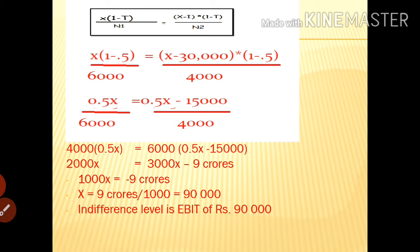Here we apply the specific equation. The first part is: x into (1 minus t) divided by n1 — that is the all-equity plan. The second part is: (x minus i) into (1 minus t) divided by n2 — that is the debt-equity plan.